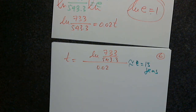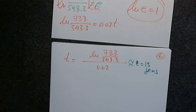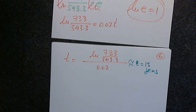Let's do the calculation together carefully in the graphing calculator: natural log, open parentheses, 733 divided by 543.3, close parentheses, divided by 0.02, then enter. We get 14.97, so it's indeed approximately 15 years.